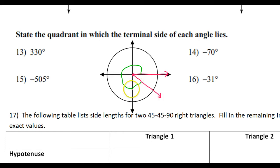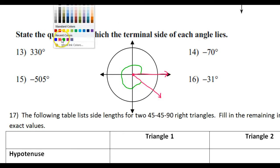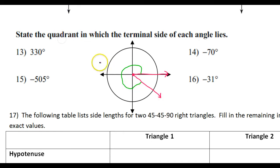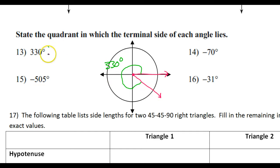So this is a picture of a 330 degree angle. So what quadrant is it in? Quadrant 4.